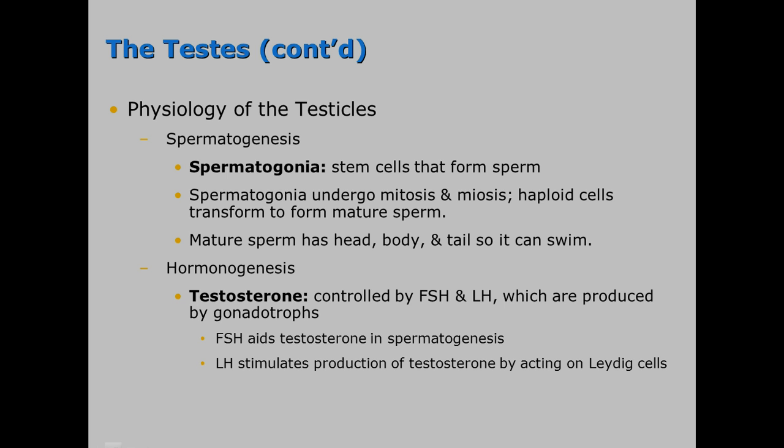The testes also perform hormonogenesis, producing testosterone. Testosterone is controlled by FSH and LH, which are produced by the gonadotrophs. FSH, or follicle stimulating hormone, aids testosterone in the making of sperm, and LH, or luteinizing hormone, stimulates the production of testosterone by acting on Leydig cells.